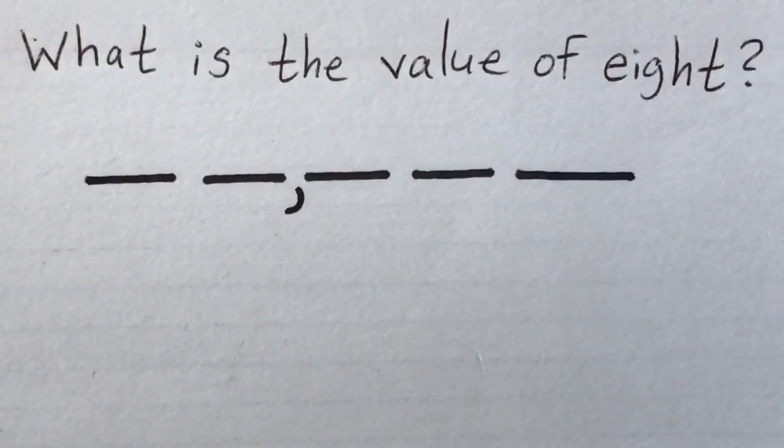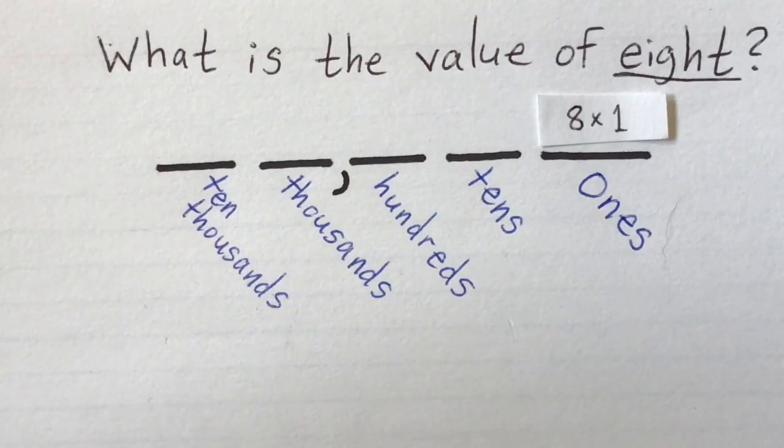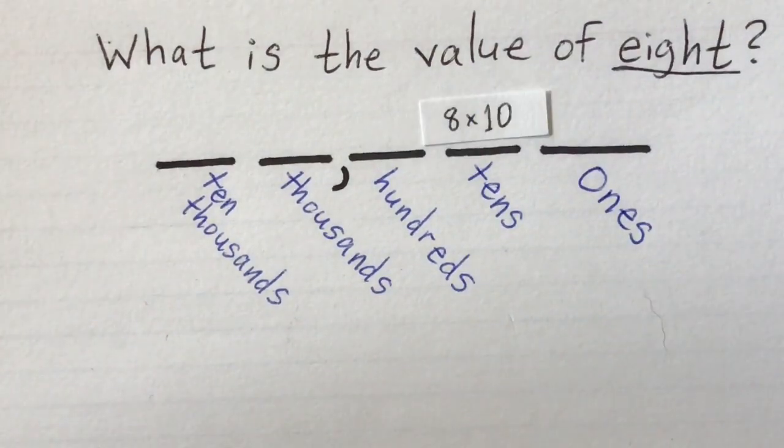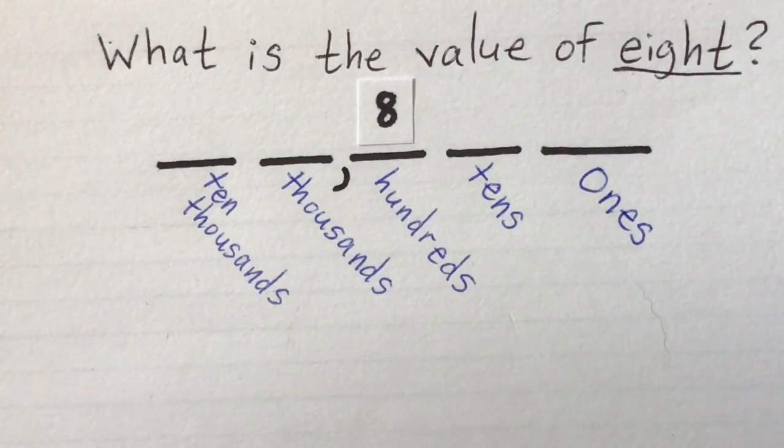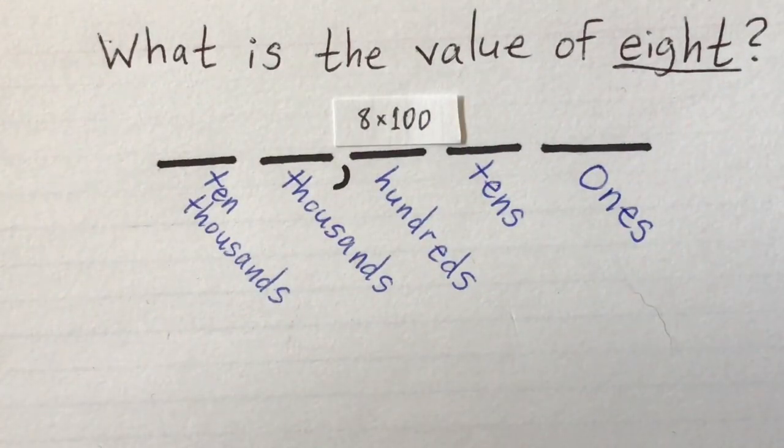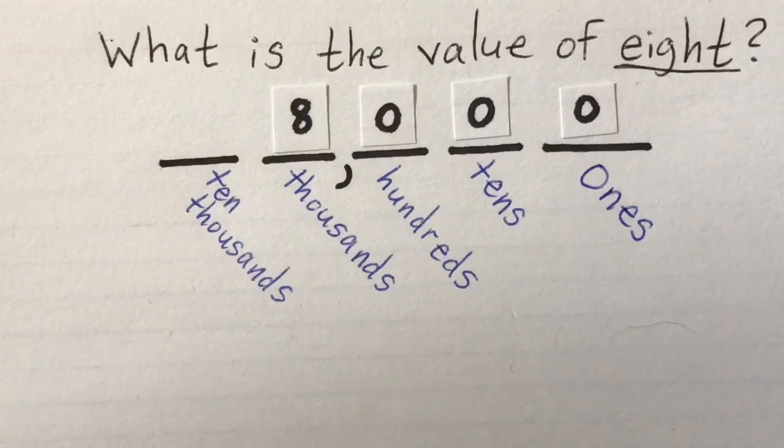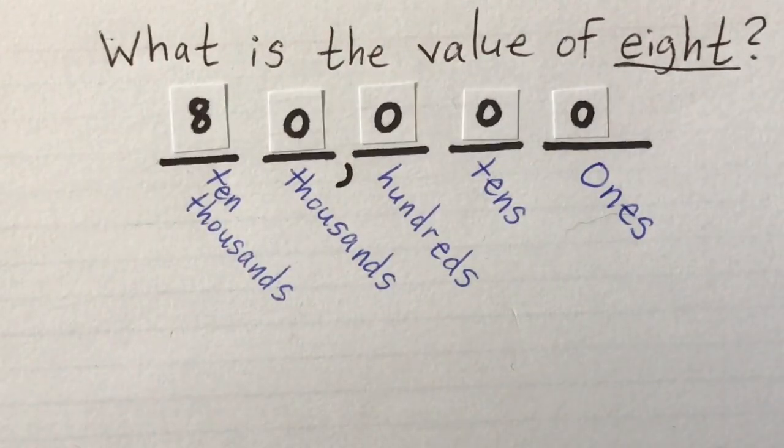So what is the value of 8? When you see the number 8 in the ones place, that basically is the same thing as saying 8 times 1 which equals 8. When you see the 8 in the tens place, it's the same thing as saying 8 times 10 which equals 80. When the 8 is in the hundreds place, the value of 8 is 8 times 100 which equals 800. The digit 8 in the thousands place is 8 times 1,000 which equals 8,000. And the 8 in the ten thousands place is 8 times 10,000 which equals 80,000.